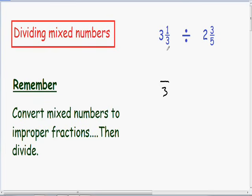And in the numerator, we need to multiply the denominator of 3 by the whole number of 3. So 3 times 3 is 9. And then we need to add the numerator of 1.